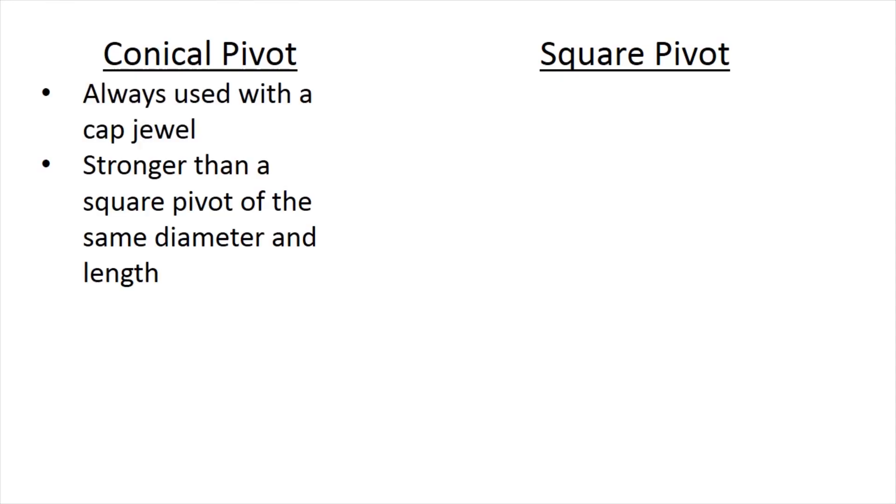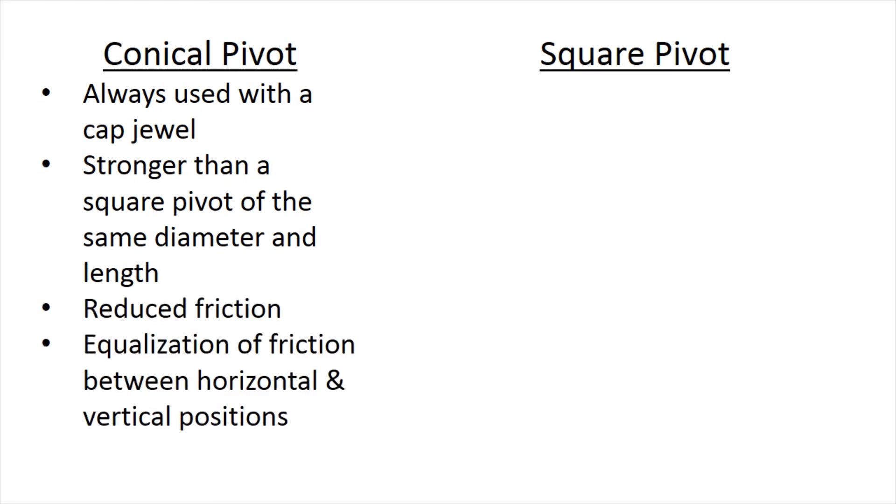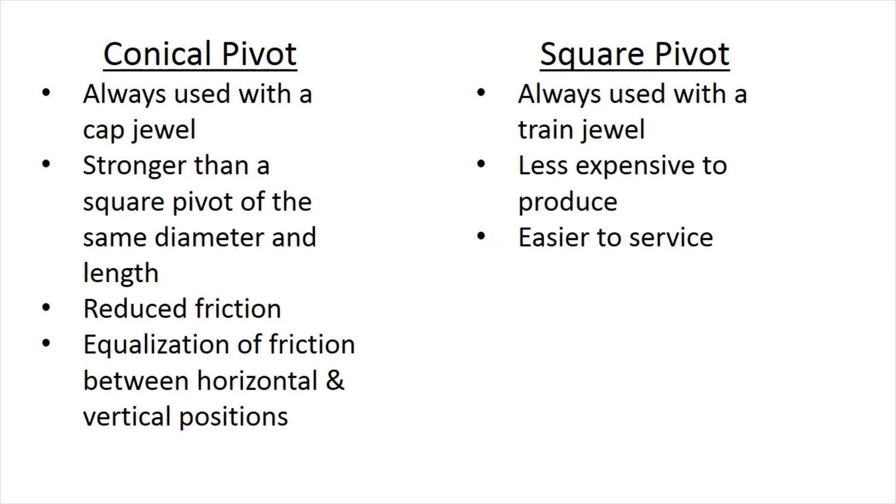In conclusion, when looking at conical pivots, they're always used with a cap jewel. They're stronger than a square pivot of the same diameter and length. They provide for reduced friction and an equalization of friction between horizontal and vertical positions. A square pivot is always used with a train jewel, is less expensive to produce, and easier to service.